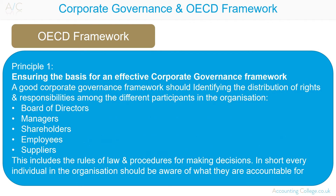Principle 1: Ensuring the basis for an effective corporate governance framework. A good corporate governance framework should identify the distribution of rights and responsibilities among the different participants in the organisation — board of directors, managers, shareholders, employees, suppliers etc. This includes the rules of law and procedures for making decisions. In short, every individual in the organisation should be aware of what they are accountable for.